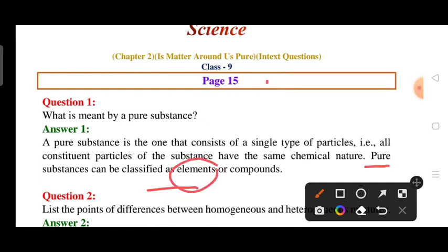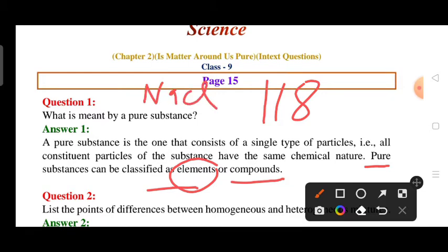All elements and all compounds like NaCl, CaCl2 are counted as pure substances. Elements like lithium, gold, silver, and copper are examples of pure substances. So what we have told you is that pure substance contains particles of the same chemical nature.